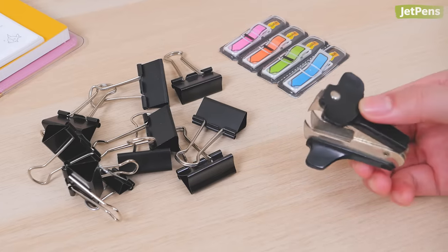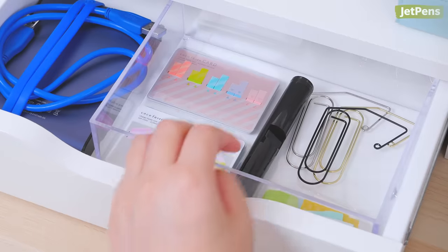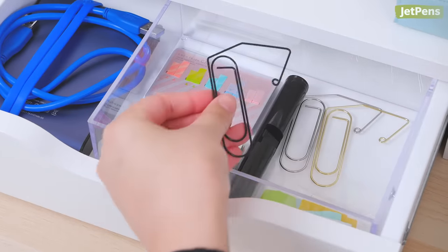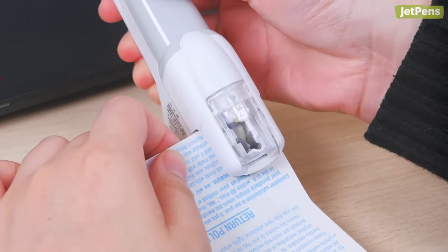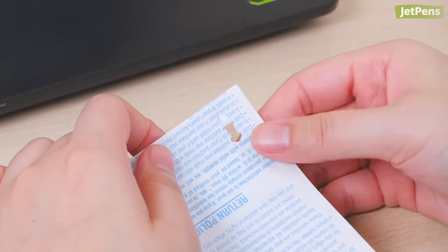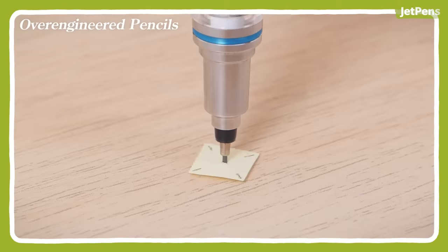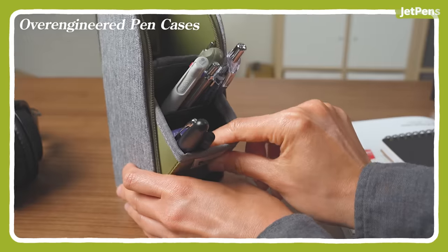Office supplies may seem mundane, but we're going to show you eight items that Japan takes to the next level, including rulers, page markers, and staplers. Make sure to check out our other videos covering pens, pencils, and more. Let's get started.